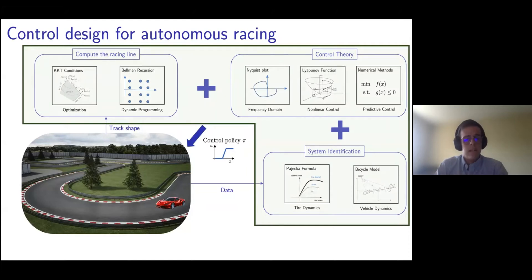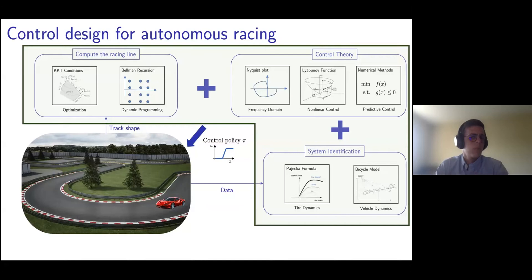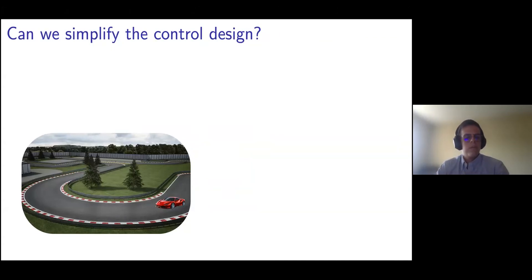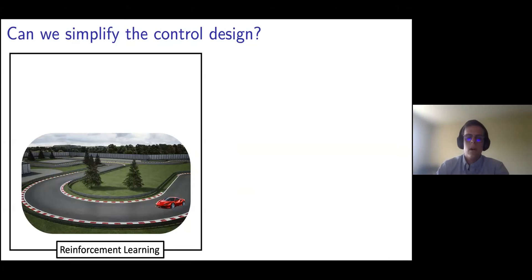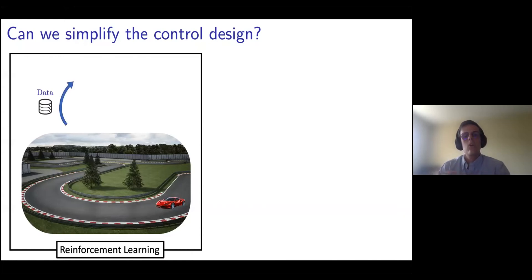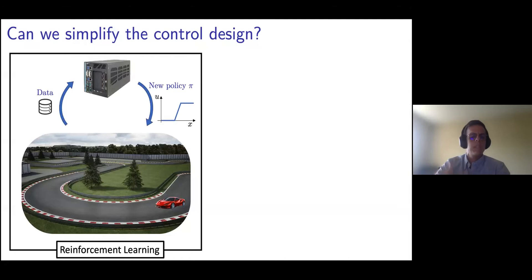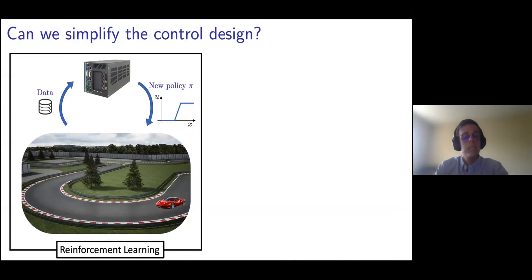The key message is that there are several strategies to design controllers that borrow tools from a wide variety of fields. When we started to work on this topic, we asked ourselves: can we simplify the control design? We started working on this problem where reinforcement learning gained popularity, as the promise of reinforcement learning is that we can leverage historical data and a lot of compute power to synthesize a control policy, which can be deployed on the real environment to collect new data and iteratively update our controller until we converge to a steady state behavior. At the end of the learning process, we have a controller that is able to minimize the lap time.